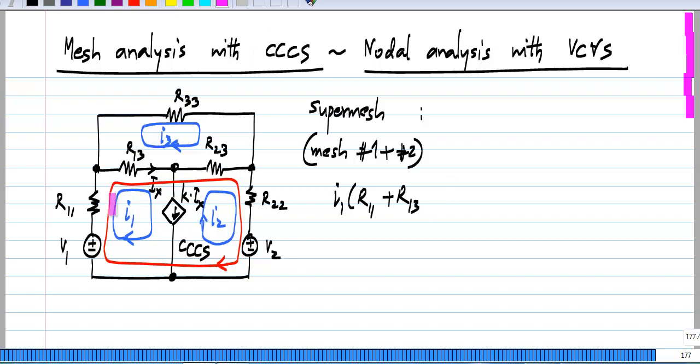So, if you look at it, I1 is flowing through R11 and R13 and will have plus I2 times R23 plus R22, I2 is flowing through R22 plus R23.